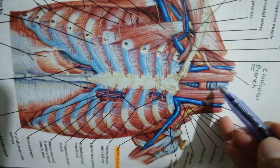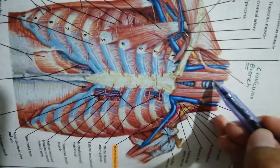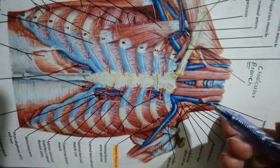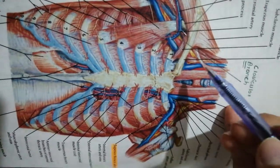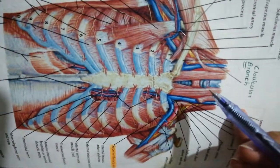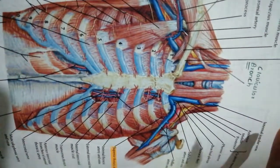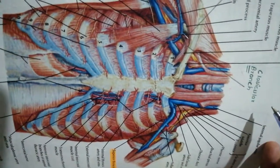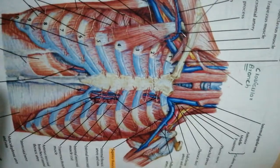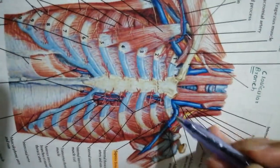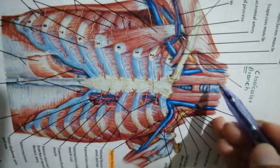The superior thoracic inlet is in two halves with a cleft in between. Each of the two halves is covered by Sibson's fascia, also known as the suprapleural membrane. Sibson's fascia is basically a triangular membrane with the apex attached to the transverse process of the C7 vertebrae and the base attached to the inner border of the first rib.